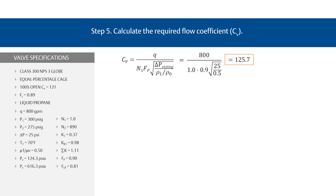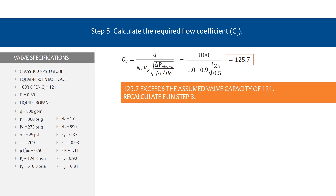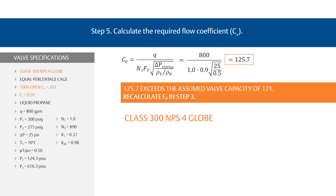The required CV of 125.7 exceeds the capacity of the assumed valve, which has a CV of 121. For this example, it may be obvious that the next larger size valve with a 4-inch nominal pipe size, or NPS4, would be the correct valve size. This may not always be true, and a repeat of the previous steps should be carried out. Now let's assume it's an NPS4 valve with a CV of 203 and an F sub L of 0.91. These values were determined from the flow coefficient table for a Class 300 NPS4 Fisher ES globe valve with an equal percentage cage.